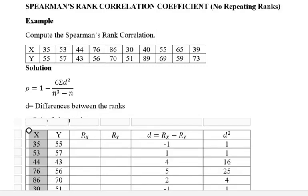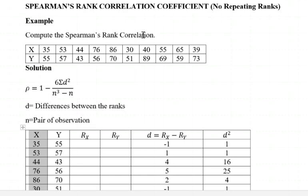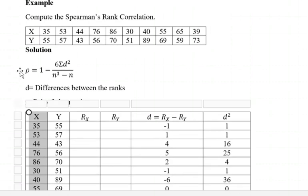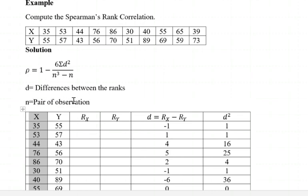Spearman's rank correlation coefficient for non-repeating ranks. For example, we have to compute the Spearman's rank correlation for this given set of data. We have values of x and values of y. In a situation whereby we don't have repeating ranks, the formula we use is: rho is equal to 1 minus 6 times summation of d squared over n cubed minus n, where n refers to the pair of observations and d refers to the difference between the ranks.